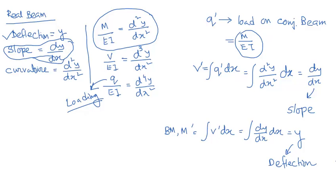When you apply the positive M/EI diagram as a downward loading on the transformed conjugate beam, this theorem holds. In the next video we will do some examples of the conjugate beam method. You may also see the calculation of slope and deflection of beams using the area moment theorem, which I have uploaded earlier. Hope you like this video — please thumbs up, subscribe to my channel, and stay tuned for more videos. Thank you.